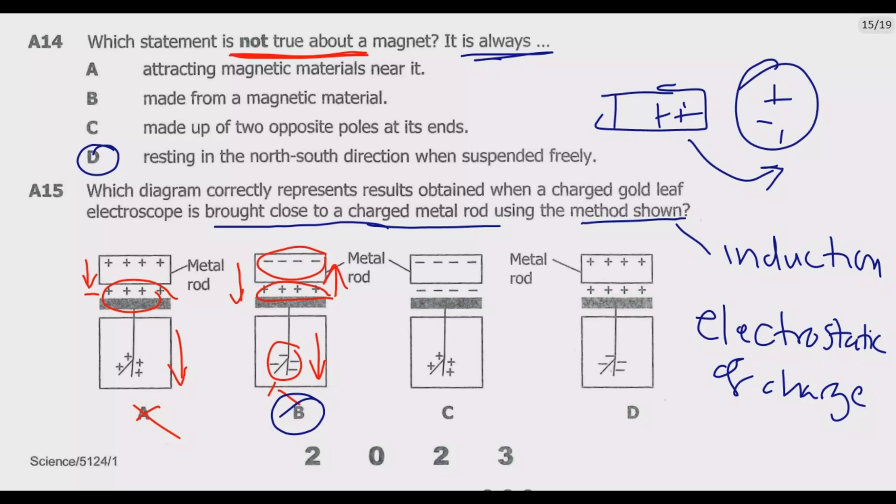If you look at C, if this is negative, this should have been positive. So this could not be correct. Then if you look at D, this is positive, this is positive. Positive would repel positive. So this side should have been positive, then this side should have been negative. So again, D cannot be correct. So B is the correct answer. It's that principle that you use to answer this question.